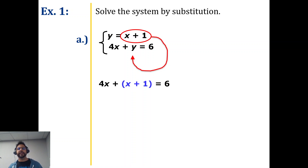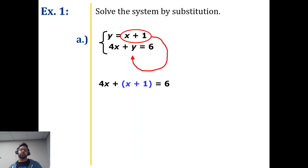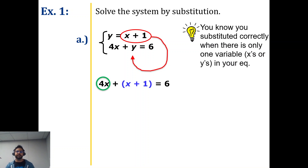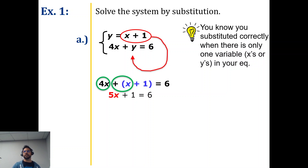y is equal to x plus one, which means we now have this new equation: 4x plus, in parentheses, x plus one. Sometimes there might be a 2y, a 3y, a negative 3y — we substitute what we have at the location we need. Since there's no number in front of the parentheses, it's really 4x plus x. Four x plus x is 5x. The plus one stays the same, and now we can solve our simple equation.